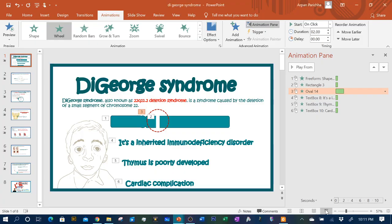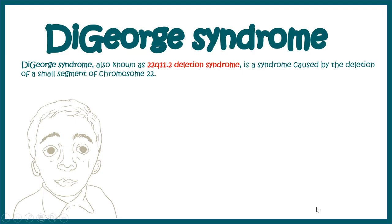In this video we'll talk about DiGeorge syndrome. DiGeorge syndrome, which is also known as 22q11.2 deletion syndrome, is a syndrome caused by the deletion of a small segment of chromosome 22.